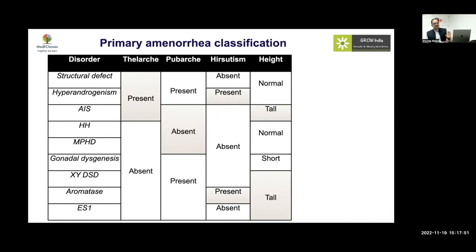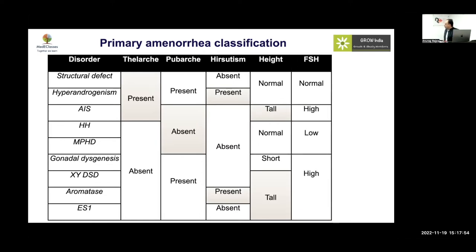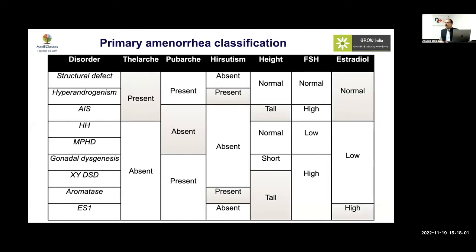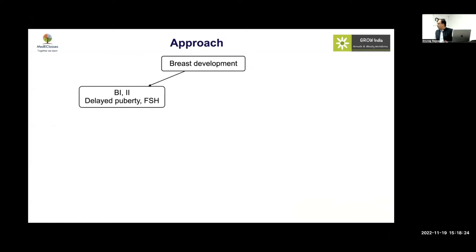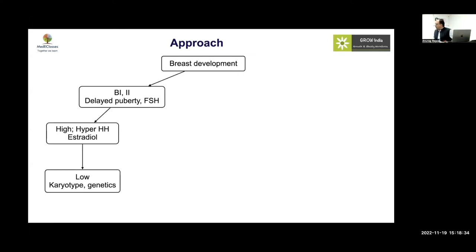FSH will usually be high in most of these cases. Low FSH indicates a central cause. If estrogen is high and there is amenorrhea, the diagnosis is estrogen resistance. The key message is: no breast development and no periods — hypo- or hypergonadotropic hypogonadism; normal breast without pubic hair — androgen insensitivity; normal breast and pubic hair with hirsutism — PCOS; normal breast and pubic hair without hirsutism — structural defect.